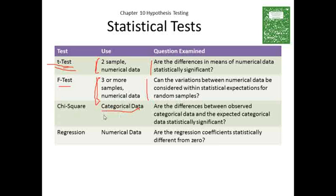We finally turned to categorical data with chi-square. And there we were trying to say we have observed, but what's our expected data? And is our observed categorical data and the expected categorical data statistically similar or different? So are these differences between observed and expected data statistically significant? That's what a chi-square does for our categorical data.